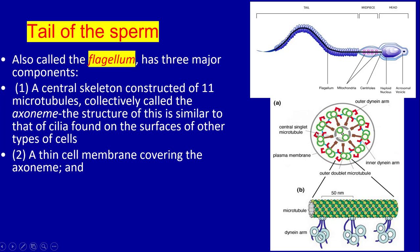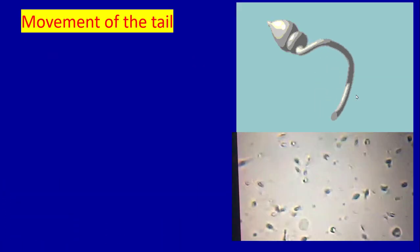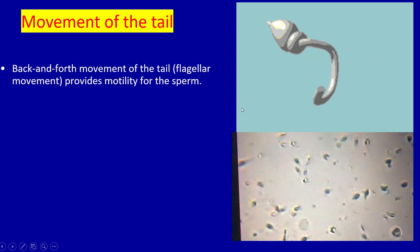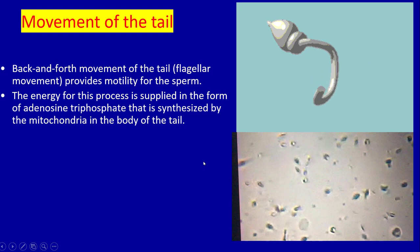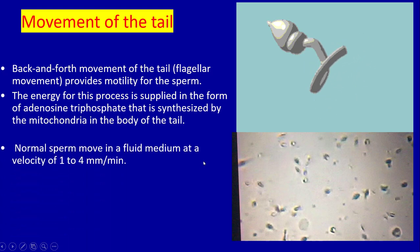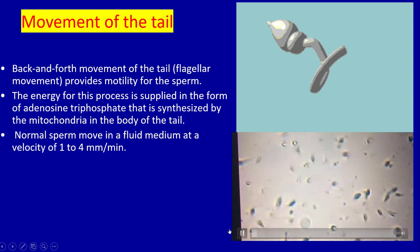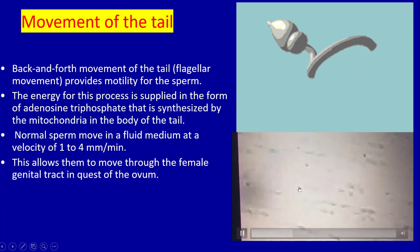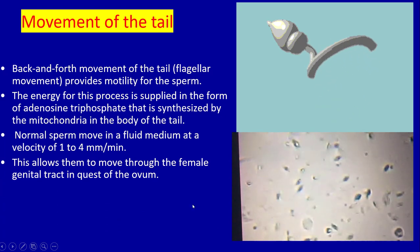The back-and-forth movement of the tail, called flagellar movement, provides motility of the sperm. The energy for this process is supplied by adenosine triphosphate that is synthesized by the mitochondria in the body of the tail.